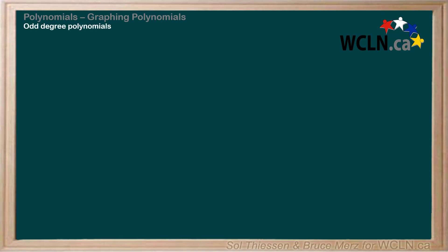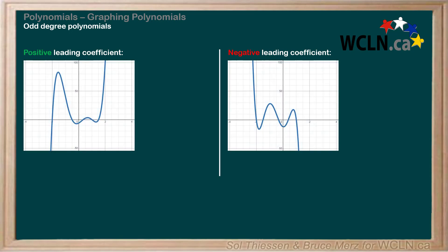Let's begin looking at odd degree polynomials. Since we know the end behavior of a polynomial depends on the leading coefficient, we'll look at two examples: one with a positive leading coefficient and one with a negative leading coefficient. Here are our two example graphs and their corresponding equations. They're both quintic, or degree 5. The degree of a polynomial refers to the highest exponent on a variable.